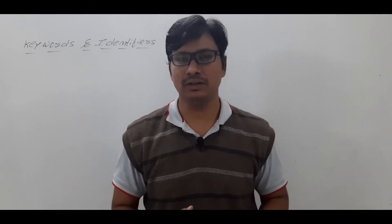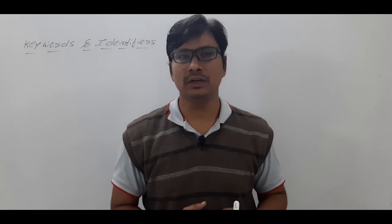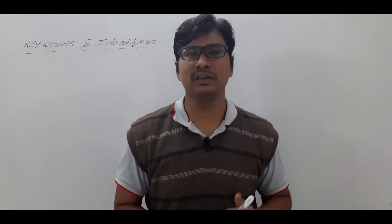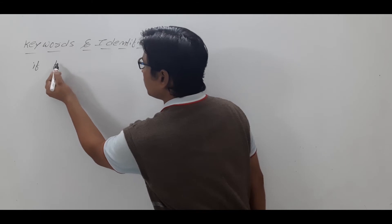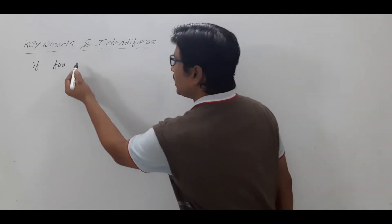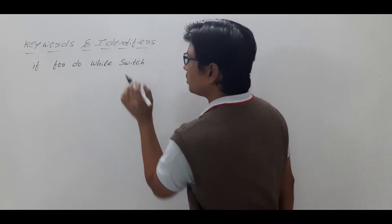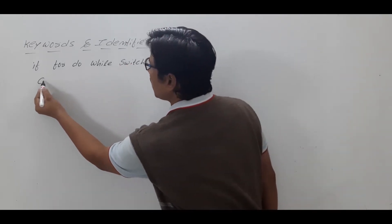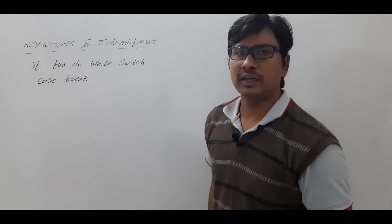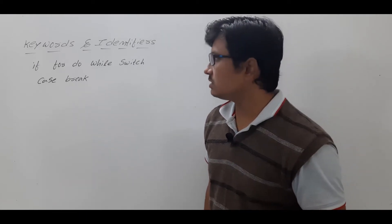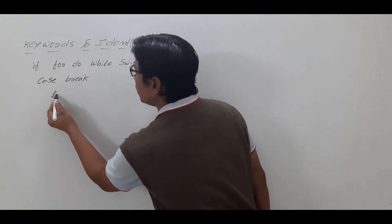First, let me define what is a keyword. A keyword has a specific meaning and we cannot change the meaning of a keyword. In C language we have 32 keywords, such as: if — for writing if statements, for — for the for loop, do, while, switch (with a small 's'), case, break, and so on. The meaning of these keywords we cannot change.